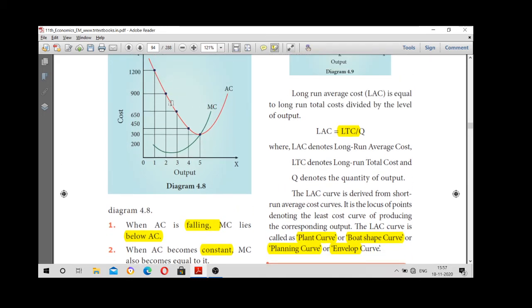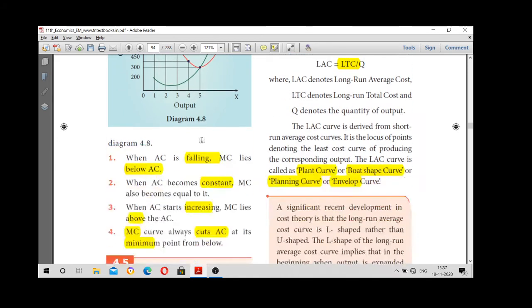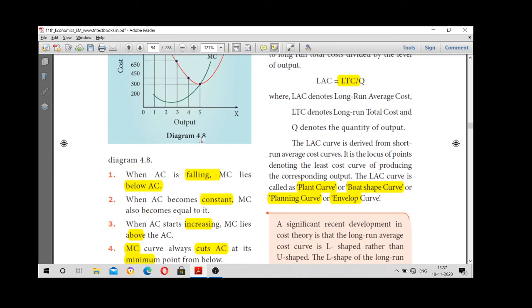There are three points. One: when AC is lower, MC is less. Two: when they meet. This is the U shape. Where it comes, the lowest point from AC.